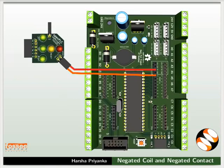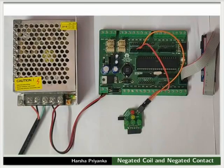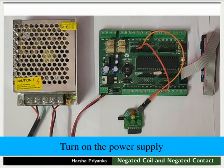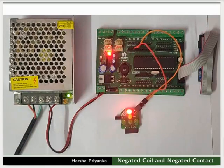Make the connections as shown in the picture. Note the difference in the connections compared to that of a normal coil. After making all the connections properly, turn on the power supply. We can observe that the red LED is glowing. That is, IO pin PA0 gives the output of the coil which is logic 0. Thus, we learned the working of a negated coil using an LED.